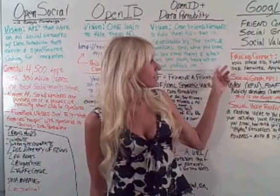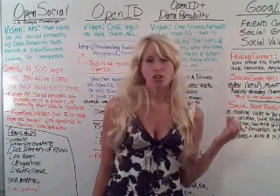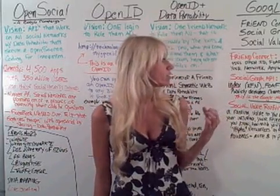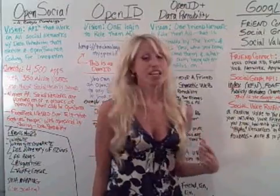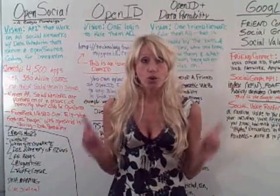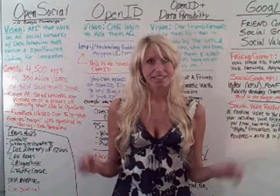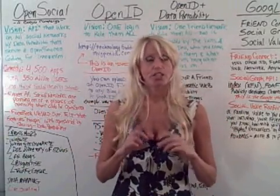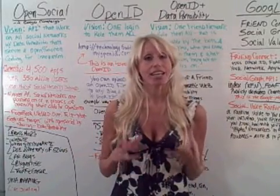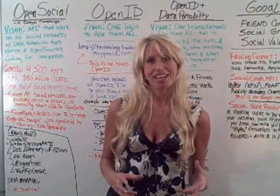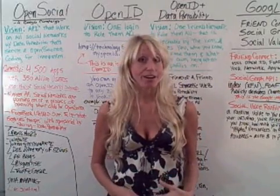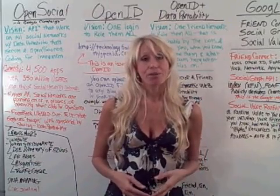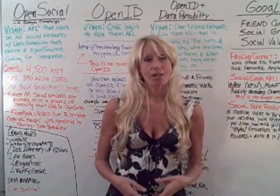Friend Connect is basically Google's new social network that they're going to be rolling out here hopefully very soon. It uses OpenSocial, OpenID, and both technologies, and it is essentially your network anywhere you want to place it. You can take the Google Friend Connect widgets, which are essentially iFrames, and you can embed them on any page on any website. So you can turn your blog into a social network instantly and bring in the rest of your network with you so that people are able to comment, interact, and join your blog community.